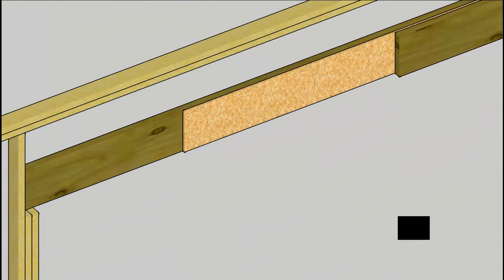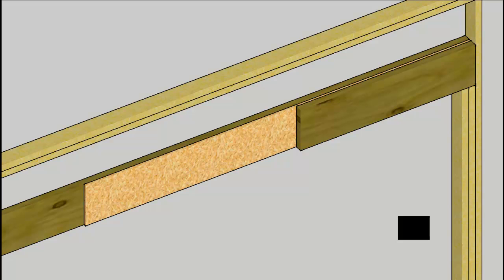Rotating the wall around, we see that this header is comprised of two 2x10s sandwiched together with a piece of ½-inch thick oriented strand board between them. That material is to allow the header to be 3½ inches thick to match the width of the 2x4 framing in the wall.